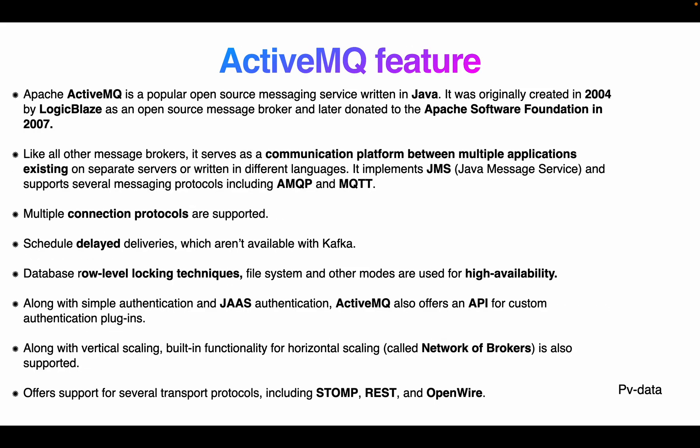Apache ActiveMQ is a popular open-source messaging service written in Java. It was originally created in 2004 by LogicBlaze as an open-source message broker and later donated to the Apache Software Foundation in 2007. Like all other messaging brokers, it serves as a communication platform between multiple applications on separate servers written in different languages.